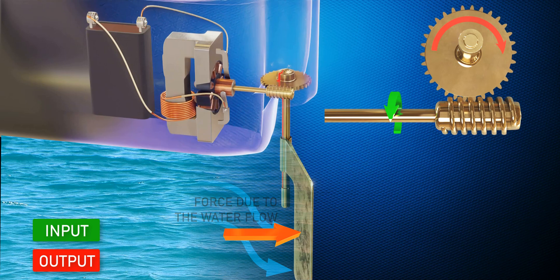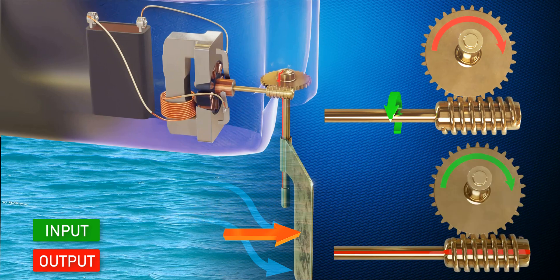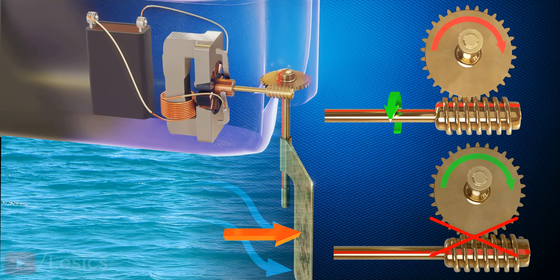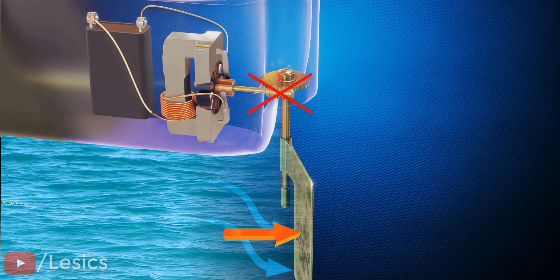The worm screw can drive the spur gear, but the spur gear movement will not rotate the worm screw. In short, this worm drive blocks any possible rudder movement due to water force. Sheer genius, right?